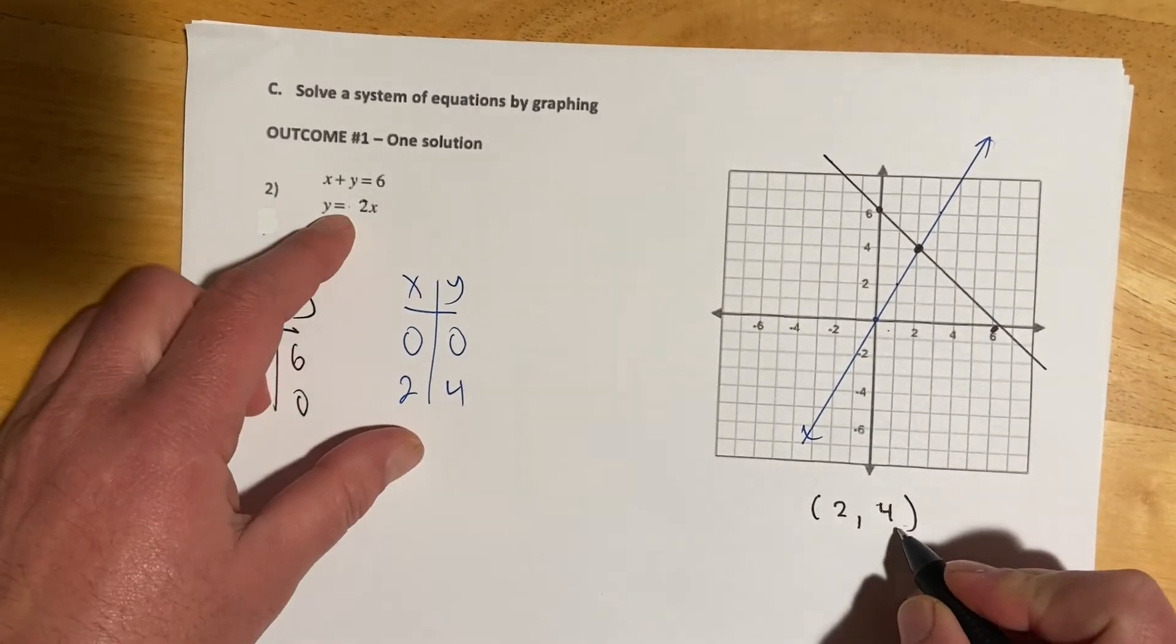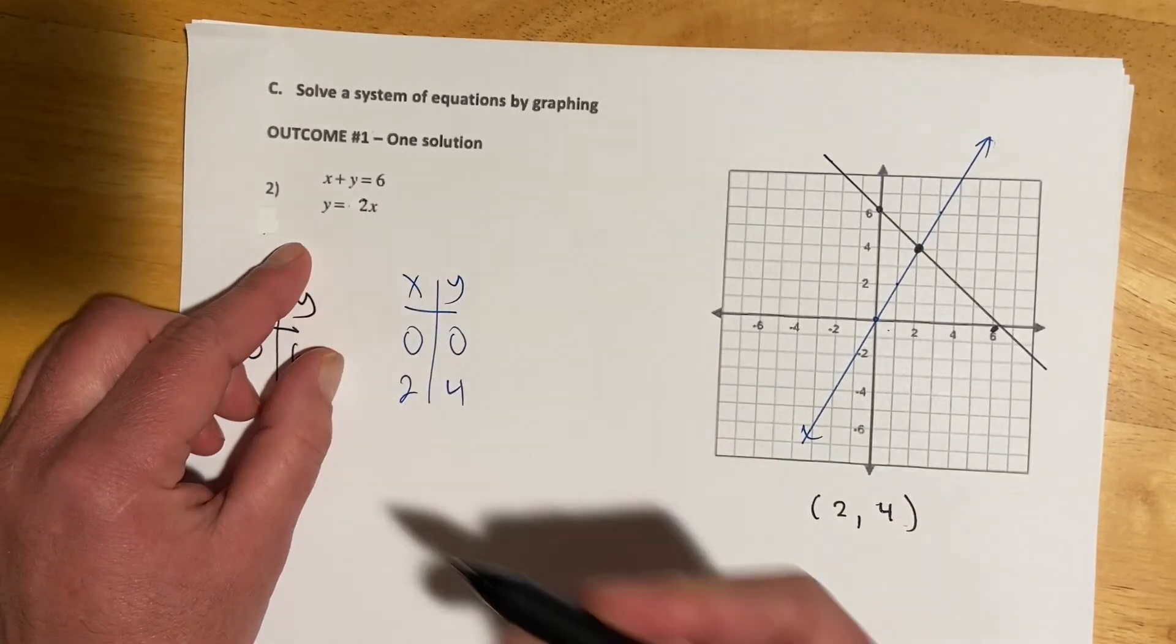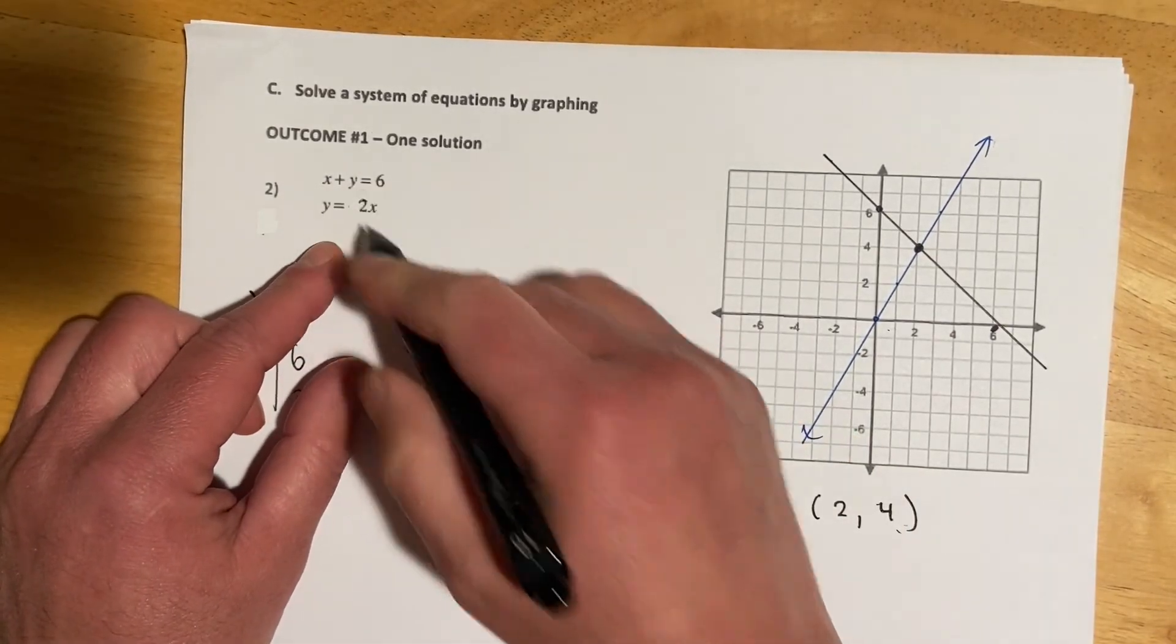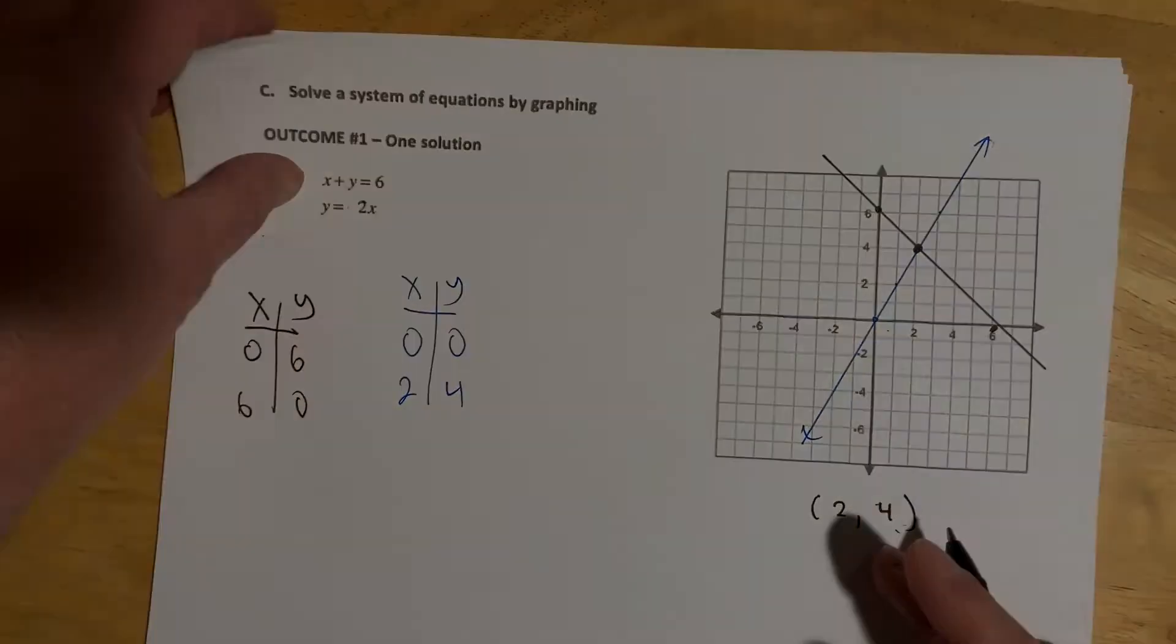So 2, 4 is the point. 2 plus 4 makes 6. 2 times 4 makes 4. So this is the point that satisfies both equations.